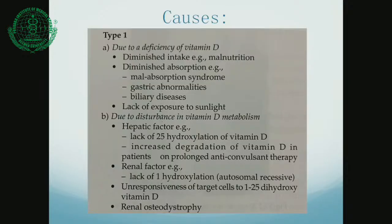Etiologically, there are two types of rickets. The first is due to deficiency of vitamin D or a disturbance in the metabolism of vitamin D. Deficiency of vitamin D can result from diminished intake due to malnutrition, or diminished absorption due to malabsorption syndromes like Crohn's disease, ulcerative colitis, gastric abnormalities, or post-gastrectomy, where calcium is mostly absorbed in the stomach and proximal duodenum. Biliary diseases also reduce absorption since bile salts are required.